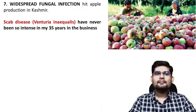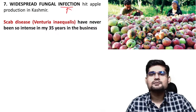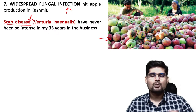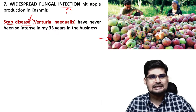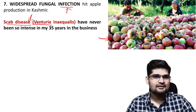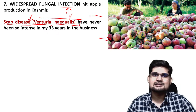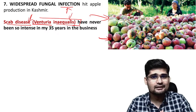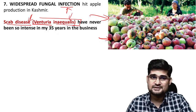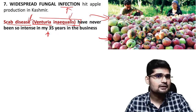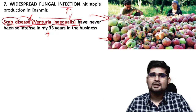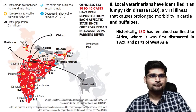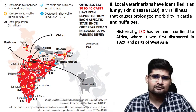Widespread fungal infection in apples was also in the news. The disease is called apple scab, scientifically named Venturia inaequalis. This fungal infection hit the Kashmir Valley and was reported to be the worst in 35 years for the apple business. The intensity of the disease was what made it notable news.